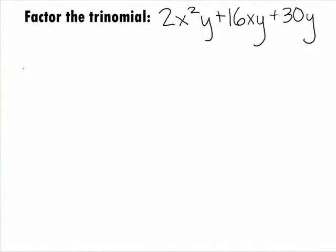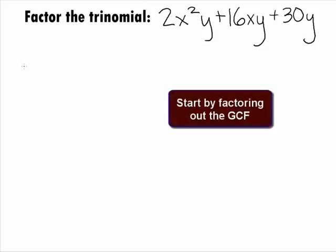In this example, we want to factor the trinomial 2x squared y plus 16xy plus 30y. This trinomial does have a Greatest Common Factor, or GCF, for all of its terms, so that is where we need to start with this one.